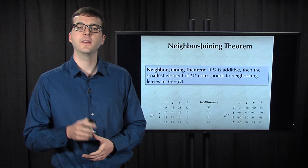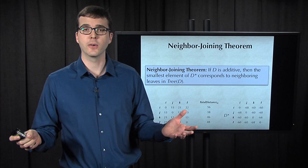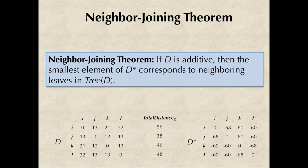Whereas taking a minimum element of the original distance matrix did not guarantee that we were going to find neighbors, taking a minimum element of the neighbor-joining matrix D* does find a pair of neighbors. You can find a proof of this theorem in a detour in the text.